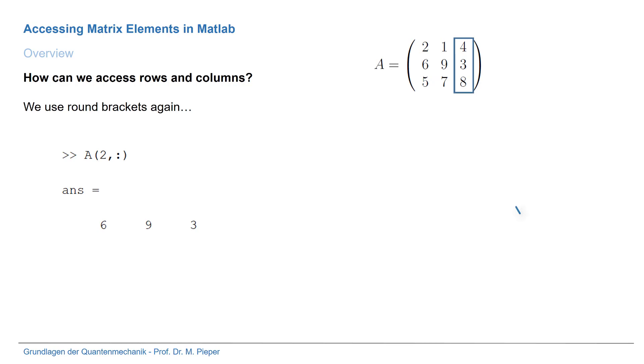Another example. We are now interested in the third column. How do we do this? Here is the answer. A round brackets. We are now interested in all rows so that's why we put the colon into the first index, and we're interested in the third column. That's why we write here the three.